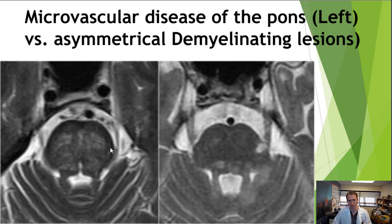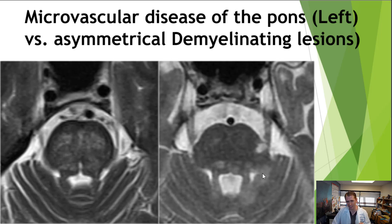These are two different images. On the left side, we see patchy symmetrical lesions very typical of vascular disease, something we might see in someone with chronic hypertension. On the right side, we see demyelinating lesions, which tend to be more asymmetrical and well-demarcated. You can see a lesion on the left pons and some changes in the left medial cerebellum. So symmetrical and patchy is more typical of vascular disease, while more distinctive and asymmetrical is more typical of demyelinating disease of the brainstem.